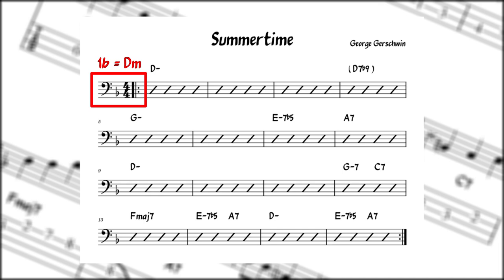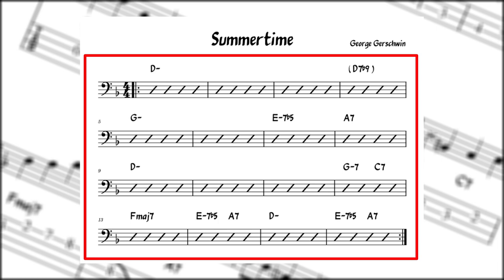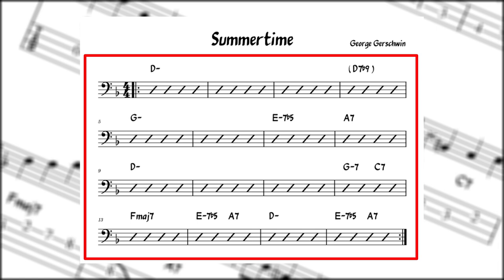Summertime is in the key of D minor, as indicated by one flat in the key signature. One flat also denotes the key of F major, but with so many D minor chords and 2-5-1s in D minor, it's safe to say that D minor is the key for this tune. It has a 16-bar repeating form which is entirely diatonic to the keys of D minor and its relative major, F major.